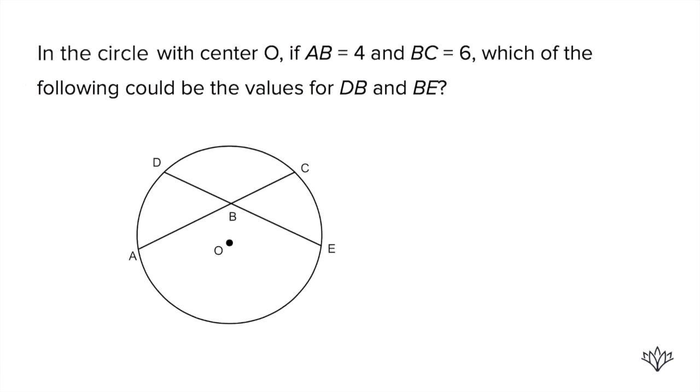Alright, so here we're dealing with chords. With chords, there's one really important rule that you need to know for this question. It says in the circle with center O, AB is four and BC is six, let's mark those down, which of the following could be the values for DB and BE? Let me explain this to you.